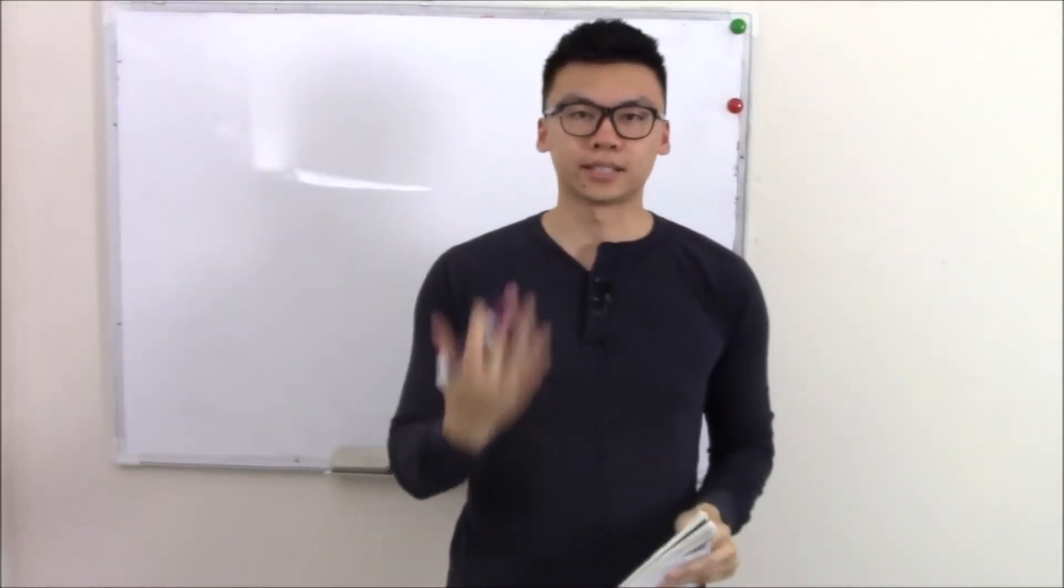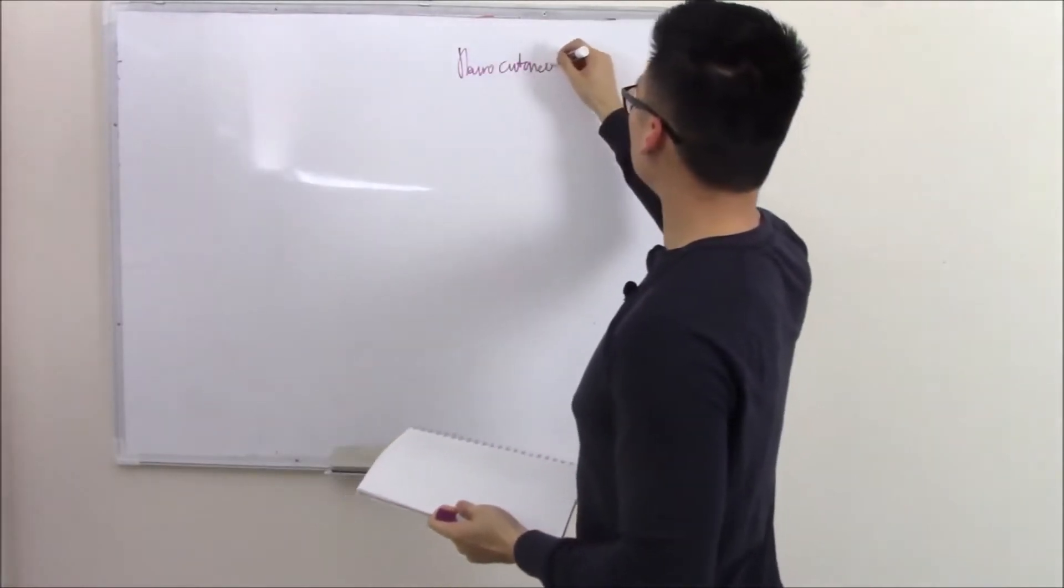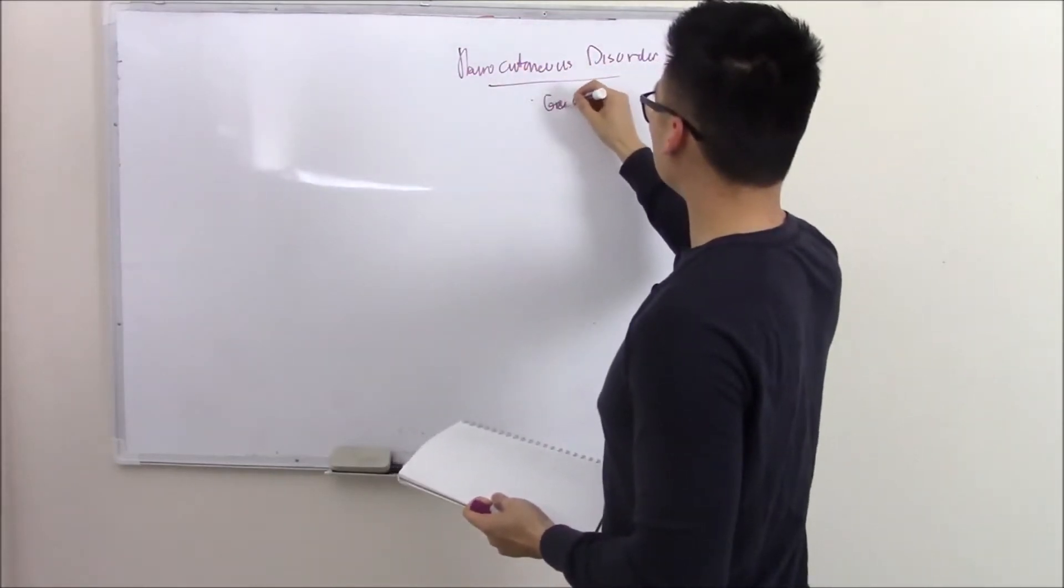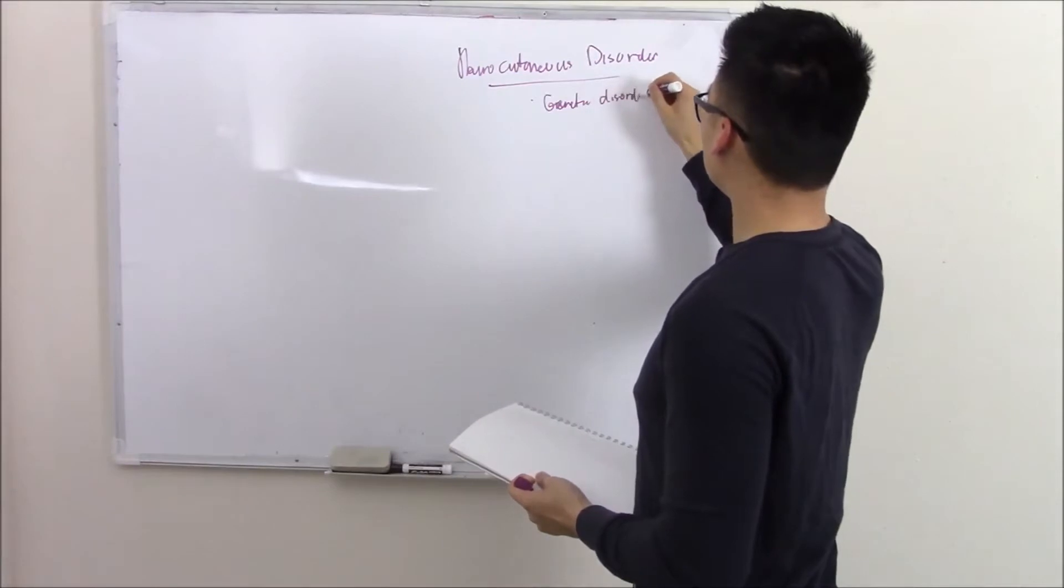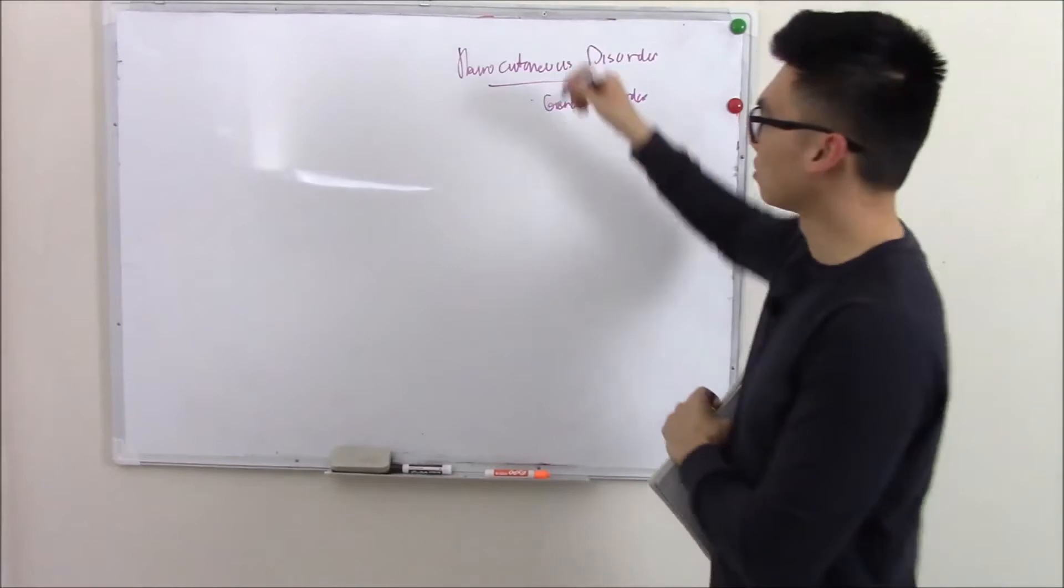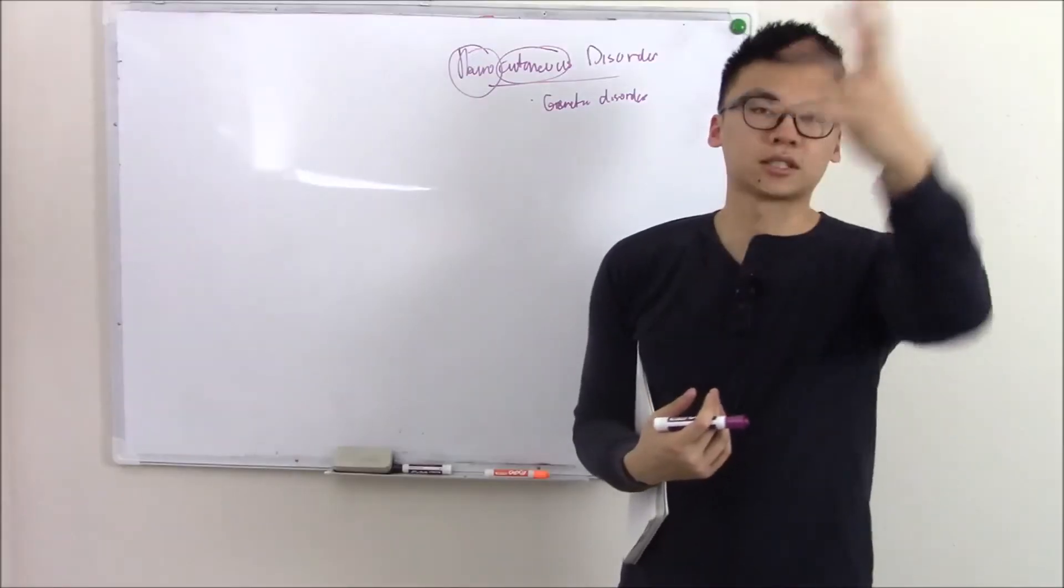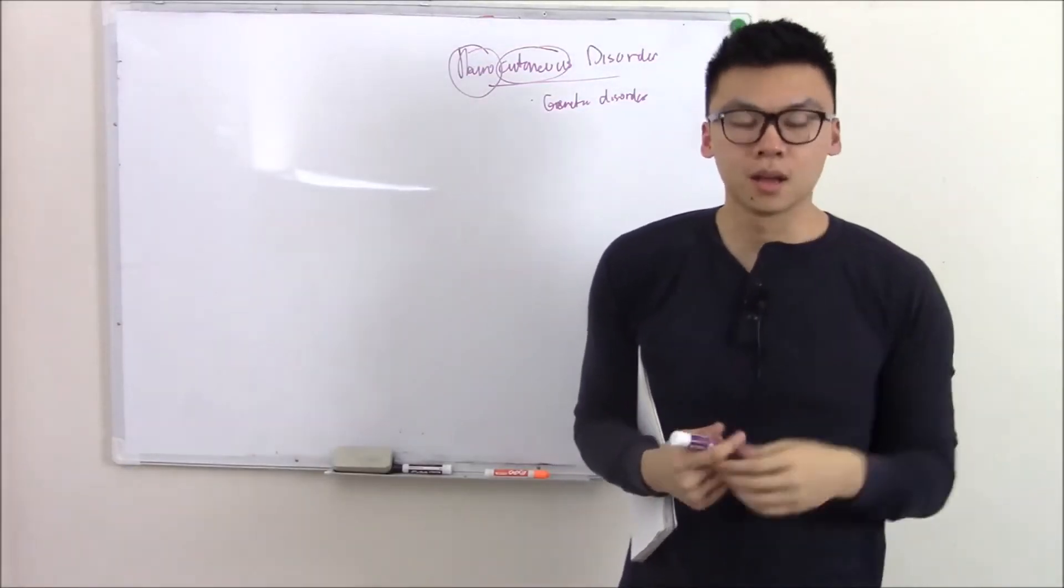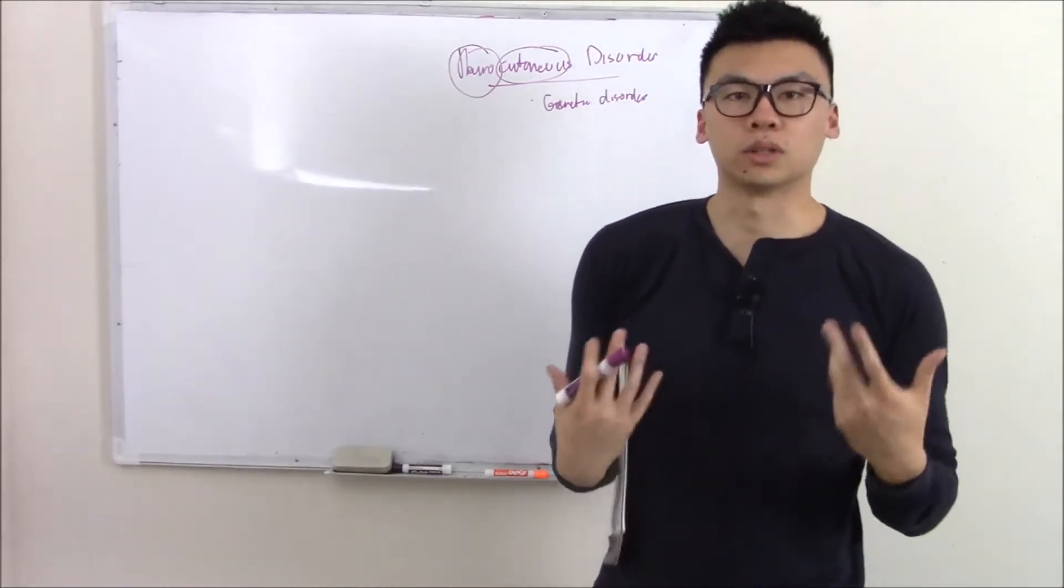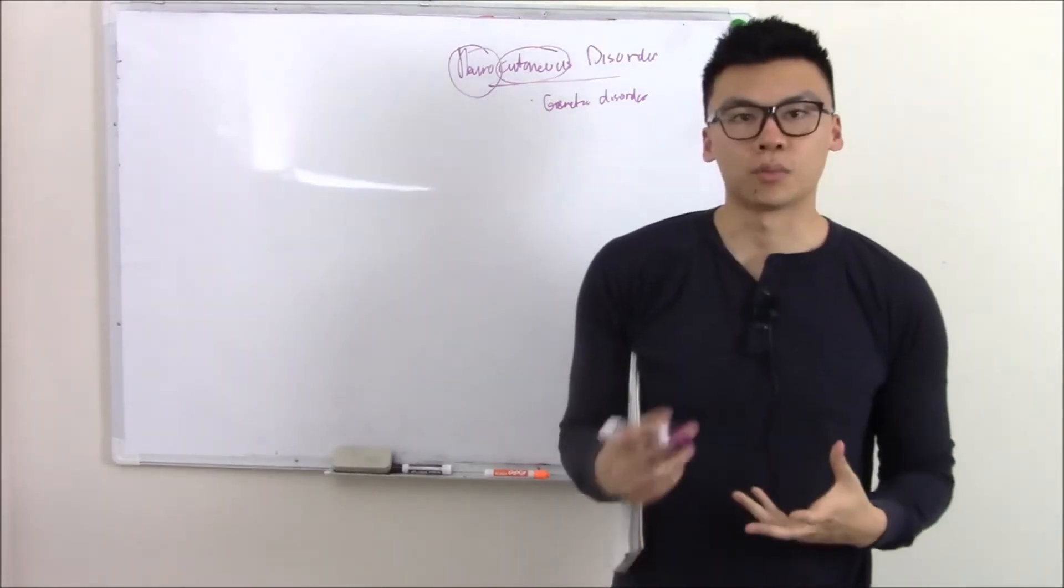This video is on neurocutaneous disorders. These are all genetic disorders where some sort of mutation is causing pathology that involves your brain and your skin. That's extremely important because on general observation, we can't really see what's going on in the brain, but we could see what's going on in the skin. If we can pick that up, it can give us a clue of what's really going on and an easier way to diagnose these neuropathologies.